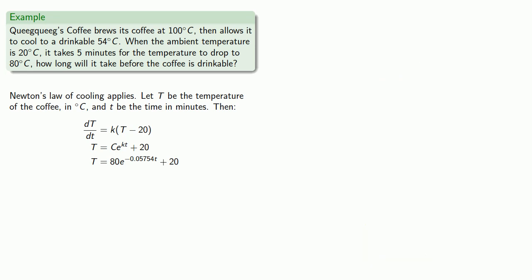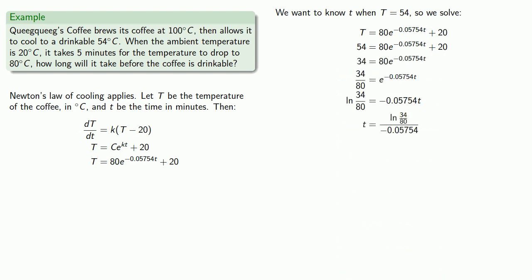And at this point, we essentially have an algebra problem. We want to know little t when temperature, big T, is 54. And so we solve our equation. Equals means replaceable. So capital T equals 54. We'll replace and solve for little t. And after all the dust settles, we find it's approximately 14.87.